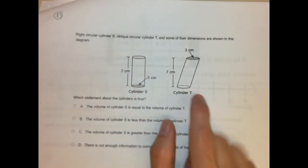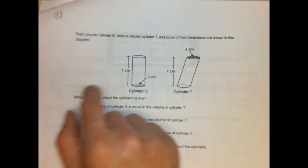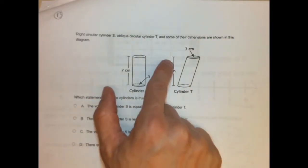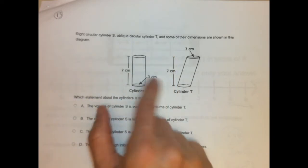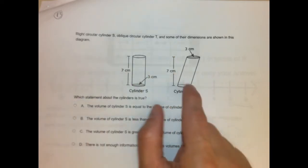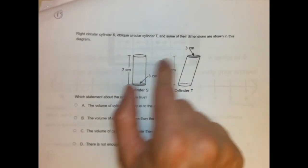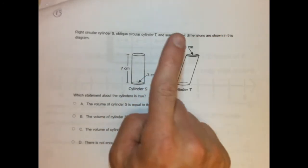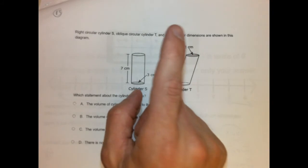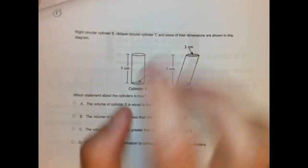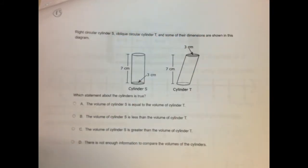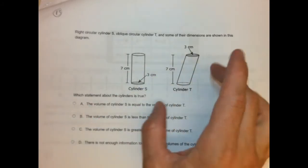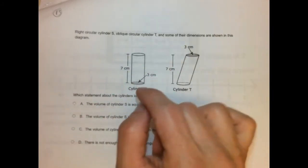Right circular cylinder S is here. Oblique circular cylinder T is here. And some of the dimensions are shown in this diagram. So they tell us they have the same height, right, the same perpendicular height. We have that. And they have the exact same diameter. Now because they have the same diameter, that also means the radius is the same. So they have the same height, remember that, perpendicular height, as well as the same radius. They don't tell us the radius, but they tell us the diameter. But because they have the same diameter, that means they have to have the same radius, because radius is half the diameter. So these would both have one and a half centimeters as a radius.